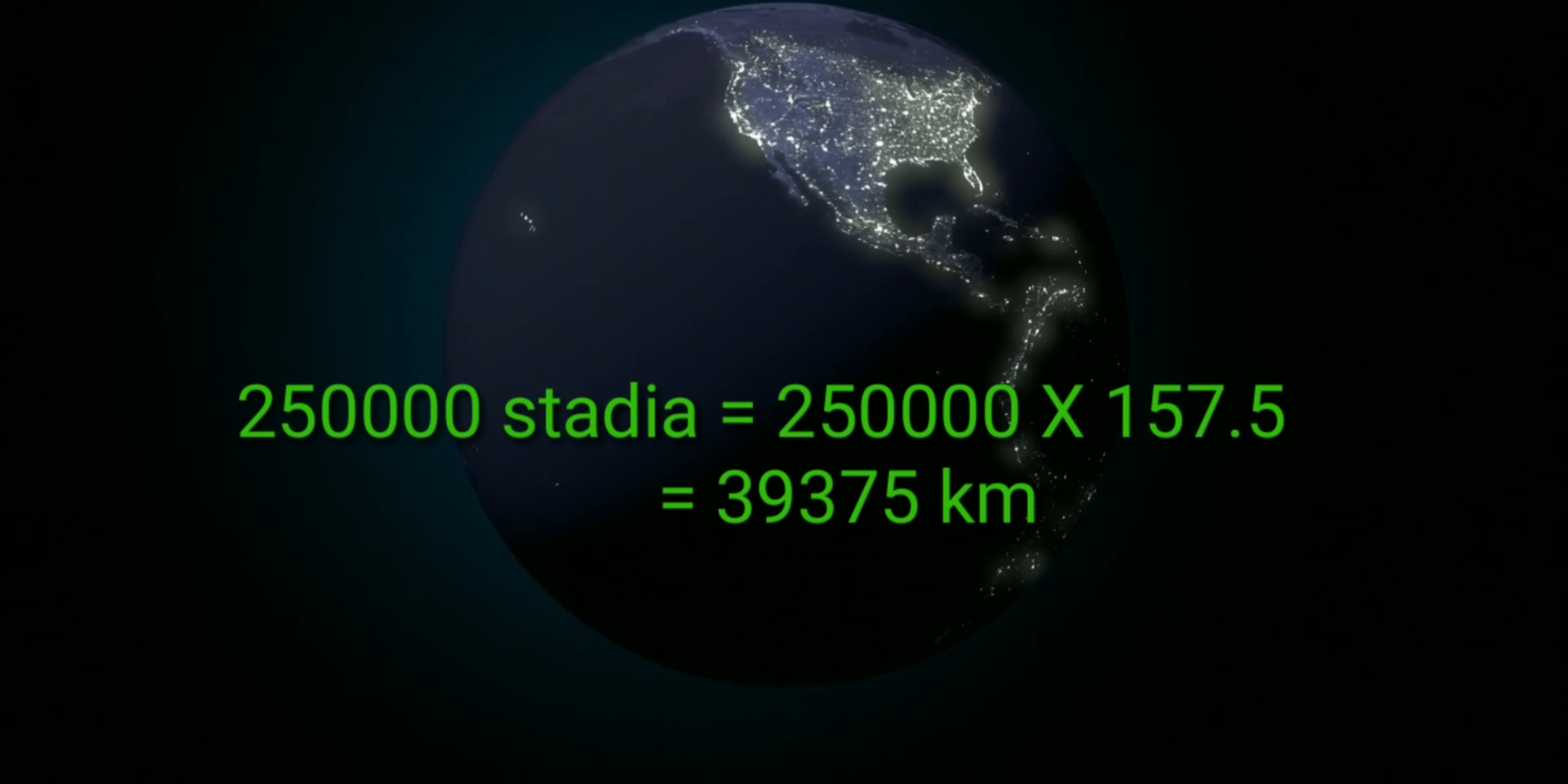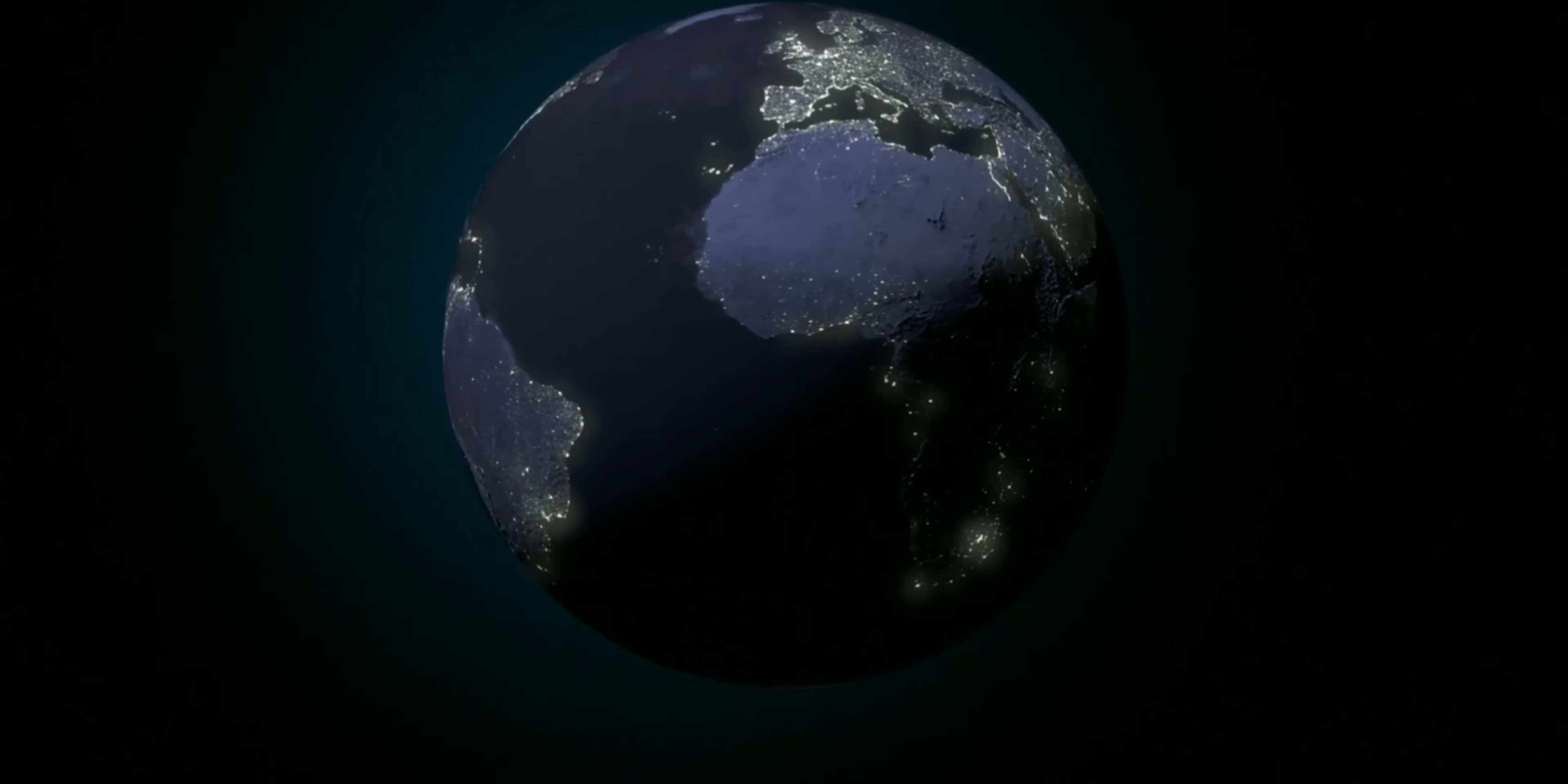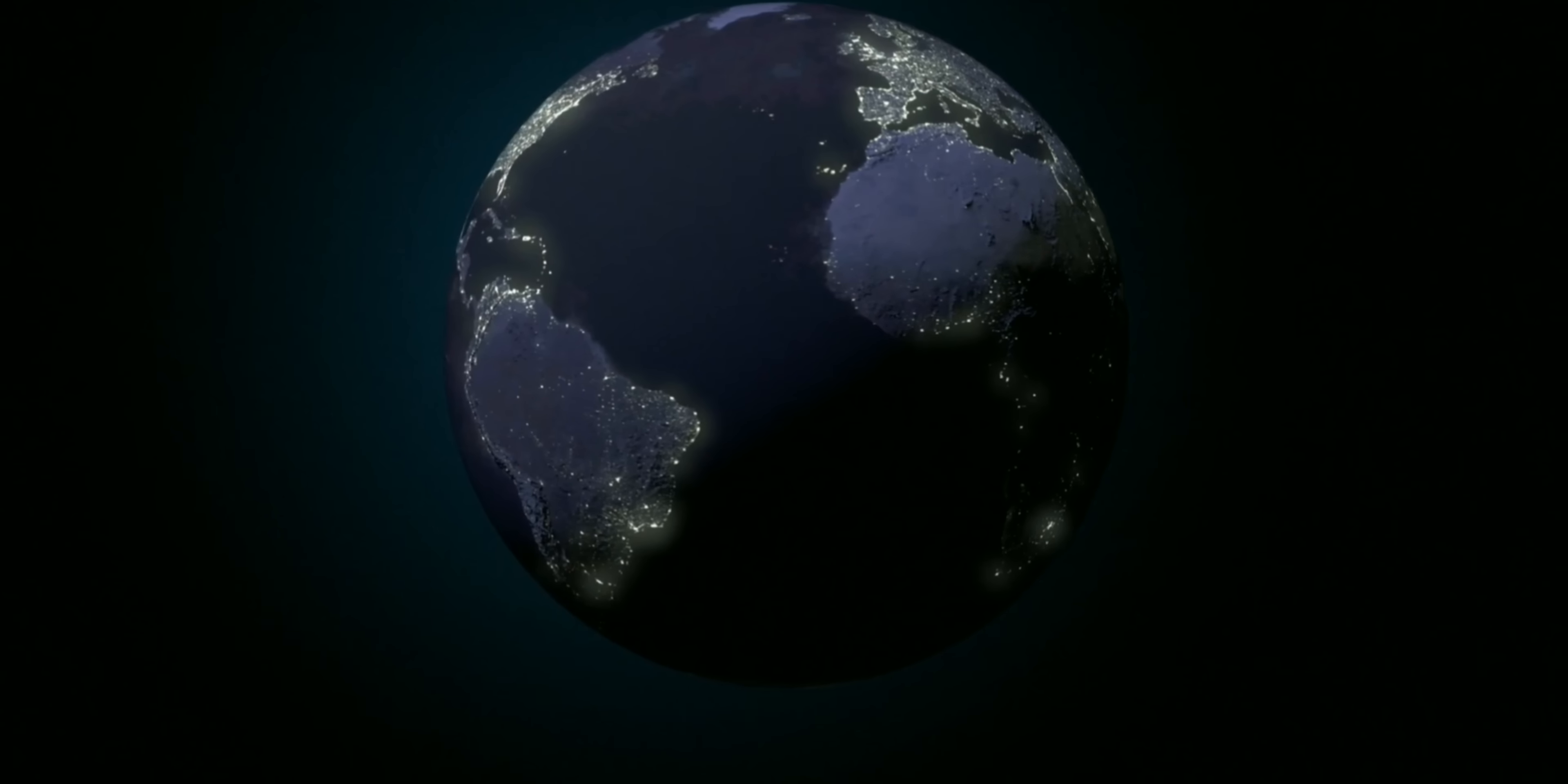One stadion equals 157.5 meters. So 250,000 into 157.5 equals 39,375 kilometers. A simple but amazing measurement, and this measurement is so close to the actual value.